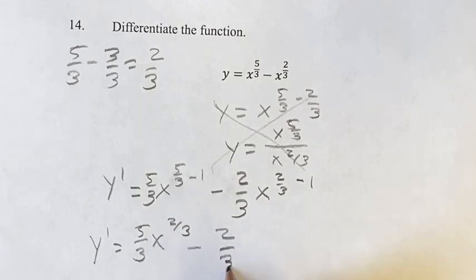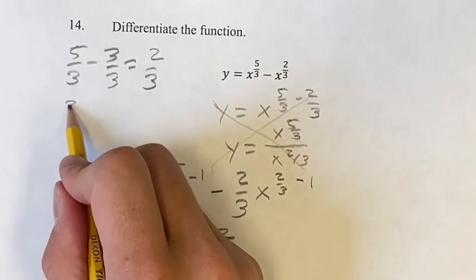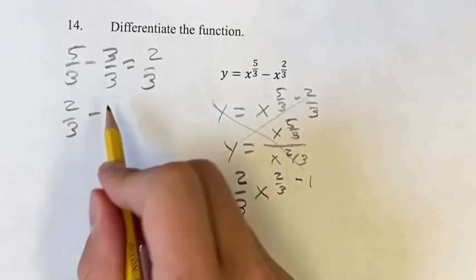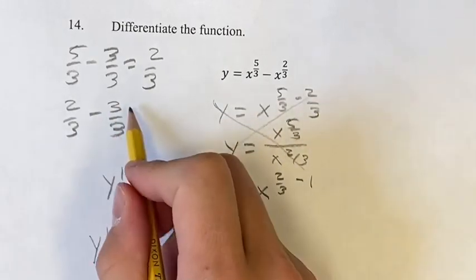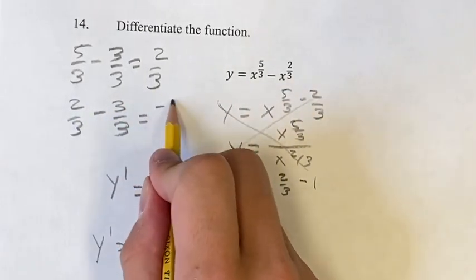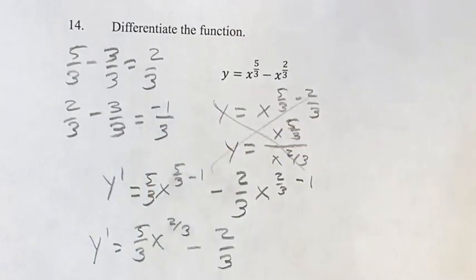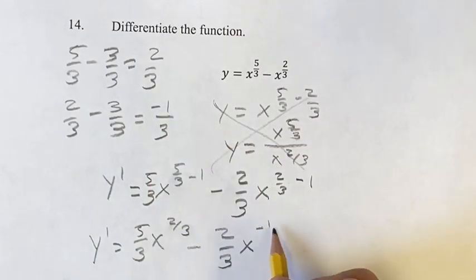So then minus 2/3, then x to the 2/3, minus, again, 1 is 3 over 3, 3/3. Is equal to 2 minus 3 is negative 1. Denominator stays the same. x to the negative 1/3.